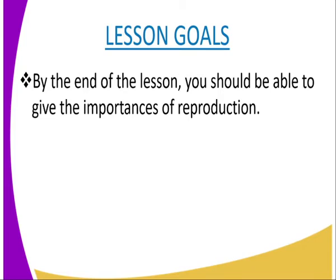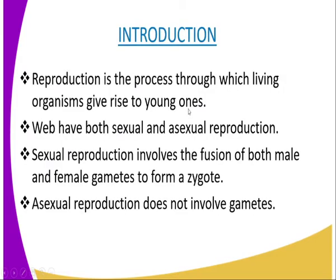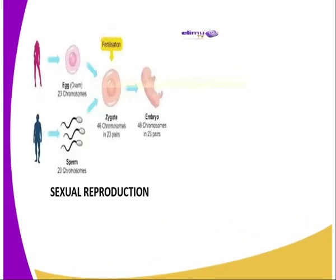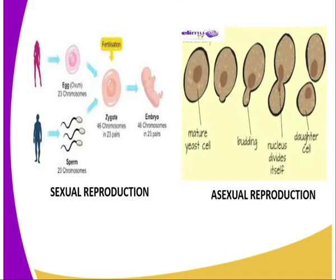In the introduction to reproduction in plants and animals, we can say that the process by which mature individuals produce offspring is called reproduction. Reproduction is an essential characteristic of all living organisms. Basically there are two types of reproduction based on the ability of the cell to divide and form new daughter cells — sexual and asexual reproduction.